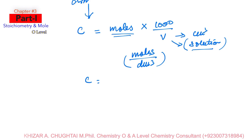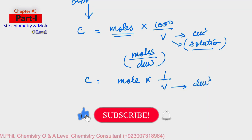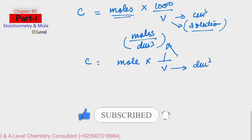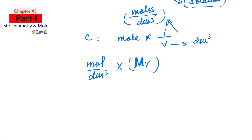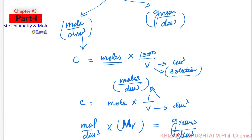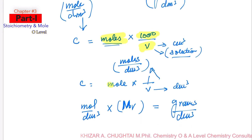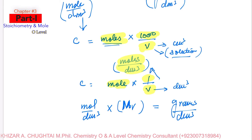We can also write concentration = moles ÷ V, where V is in dm³, and the unit is still mol/dm³. We can convert mol/dm³ into g/dm³ by multiplying the mol/dm³ value by the Mr of the solute. In summary, concentration has two units: mol/dm³ and g/dm³. For mol/dm³: C = moles × 1000 ÷ V (with V in cm³), or equivalently C = moles ÷ V (with V in dm³). Both expressions give the same unit of mol/dm³.